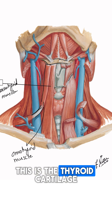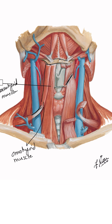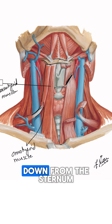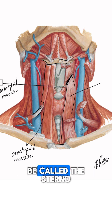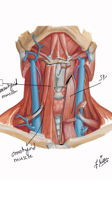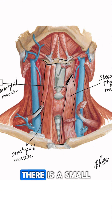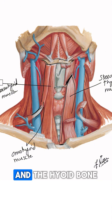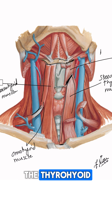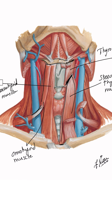This is the thyroid cartilage. You can see a muscle coming all the way down from the sternum up to the thyroid cartilage, and this is called the sternothyroid muscle. There is also a small muscle between the thyroid cartilage and the hyoid bone called the thyrohyoid muscle.